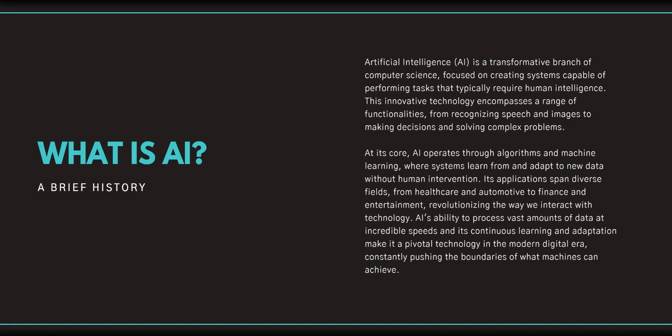What is AI? Artificial intelligence is a transformative branch of computer science focused on creating systems capable of performing tasks that typically require human intelligence. This technology enables a range of functionalities from recognizing speech and images to making decisions and solving complex problems. At its core, it operates through algorithms and machine learning, where systems learn from and adapt to new data without human intervention. Its application spans diverse fields from healthcare to automotive to finance and entertainment, revolutionizing the way we interact with technology.